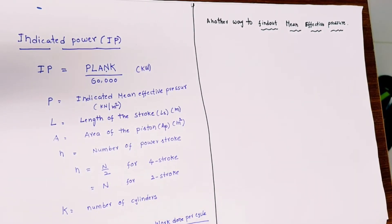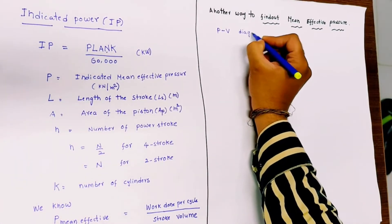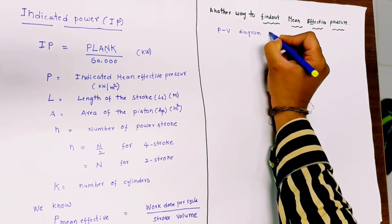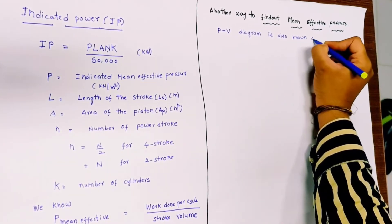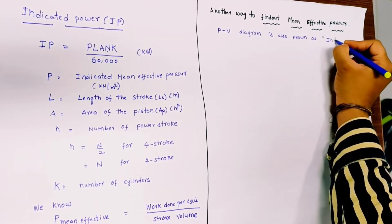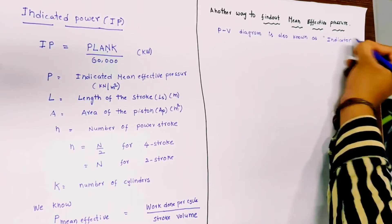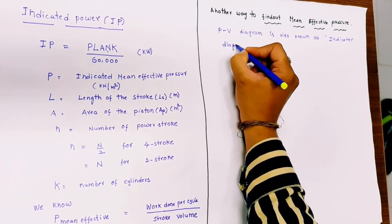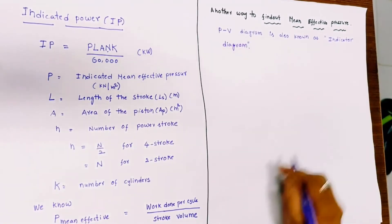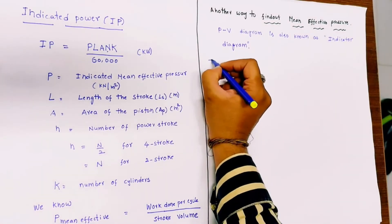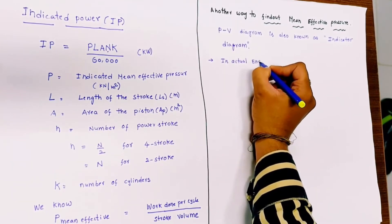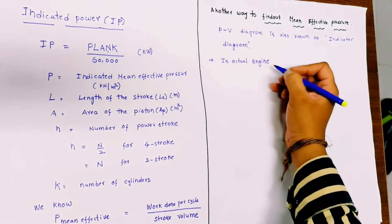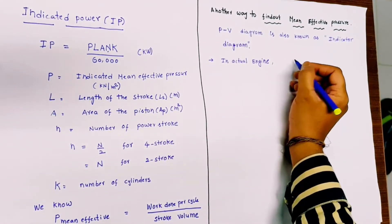First of all, this PV diagram is also known as the indicator diagram. So in an actual engine, the PV diagram is also known as the indicator diagram.